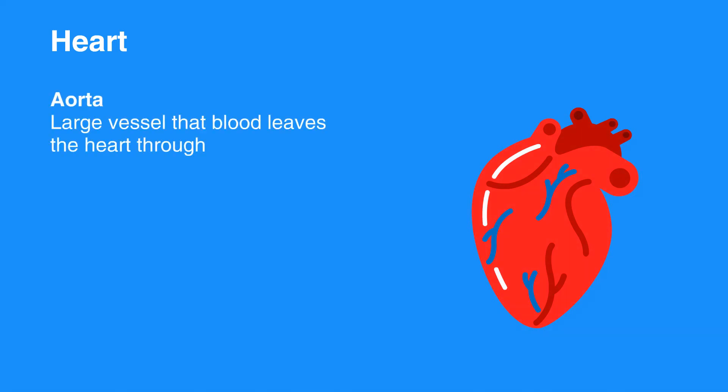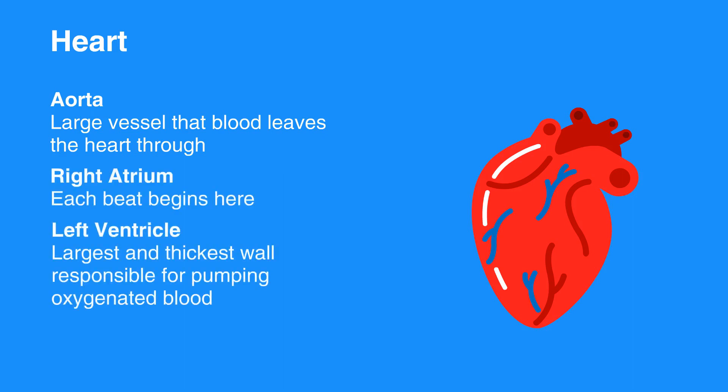The two atria contract simultaneously, as do the ventricles, making the contractions of the heart go from top to bottom. Each beat begins in the right atrium. The left ventricle is the largest and has the thickest wall, as it's responsible for pumping the newly oxygenated blood to the rest of the body.